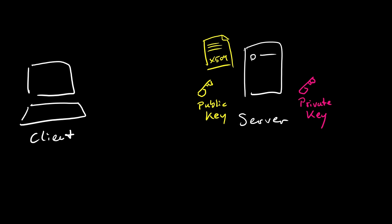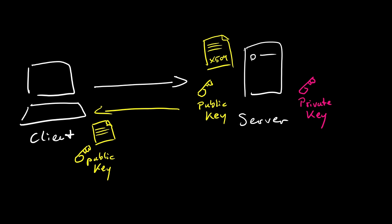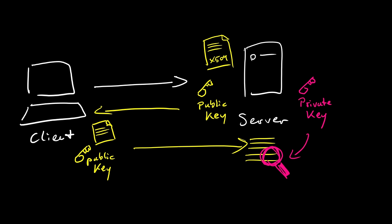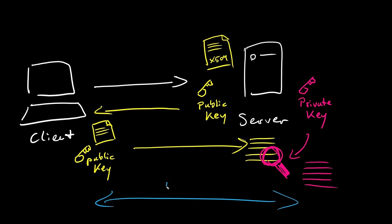What happens when a client opens a website is: the client sends a request to the server, and the server sends its SSL certificate back to the client, which contains the public key. Then the client starts the TLS handshake process and sends data encrypted with the server's public key. Because the server has a corresponding private key that belongs to this certificate, it can read the client's messages — but only the web server can decrypt them. Once the TLS handshake is done, the client and server agree on specific standards, generate session keys, and then finally exchange data.